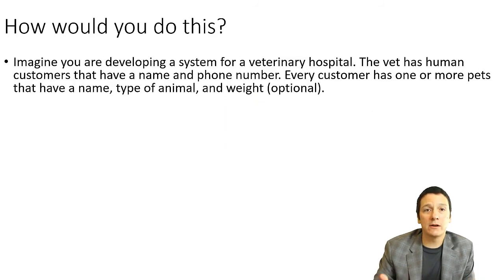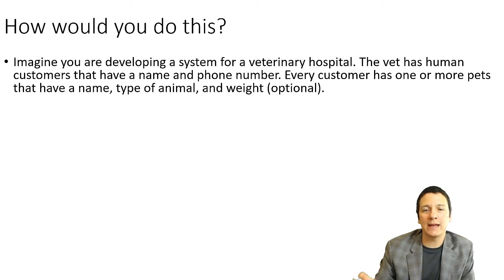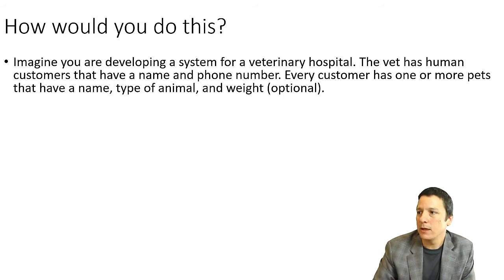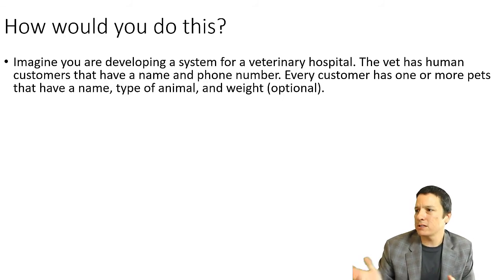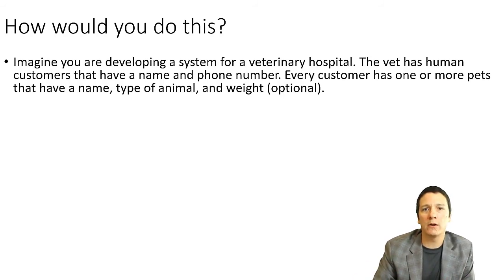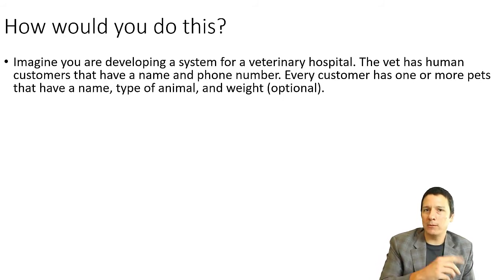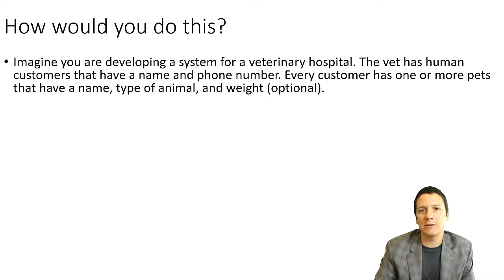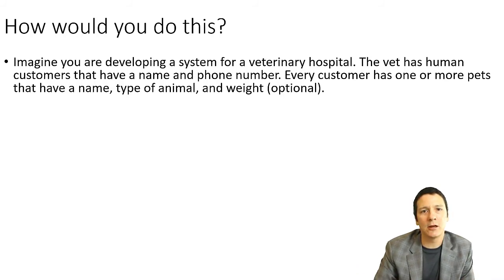Here's a short exercise. Imagine you're developing a system for a veterinarian hospital. The vet has human customers with a name and a phone number, and customers may have one or more pets. Each pet has a name, a type of animal, and optionally a weight. Think about how you would create a JSON document to capture these requirements. Go ahead and pause the video, take a minute, think about it, and then come back and we'll work through it together.